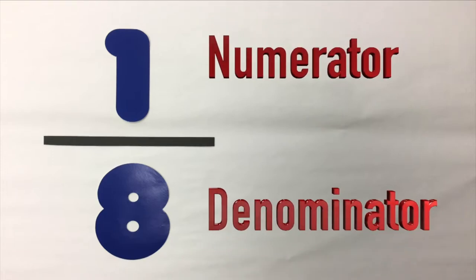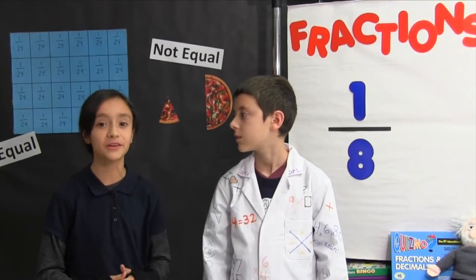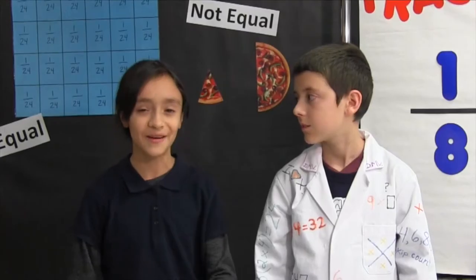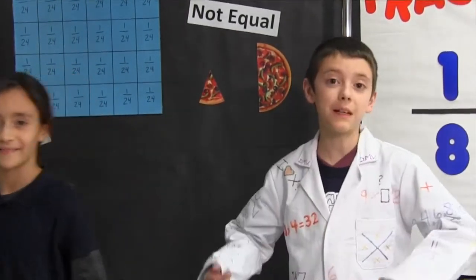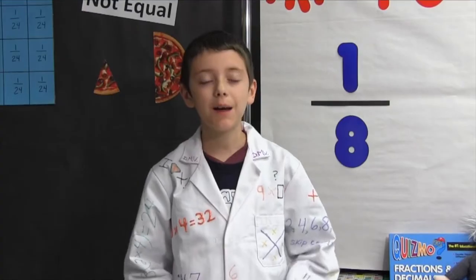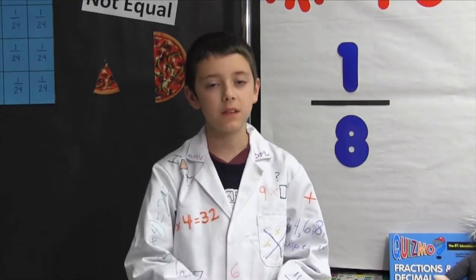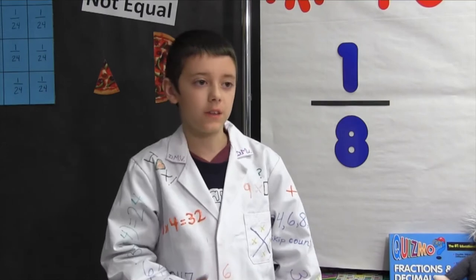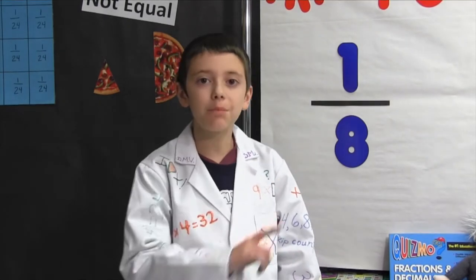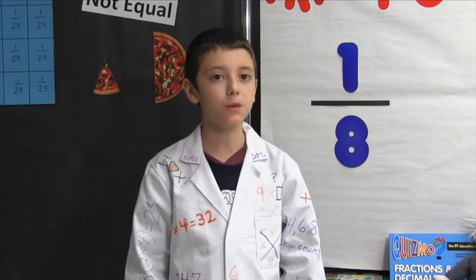I know that the denominator goes on the bottom because D stands for down and D stands for denominator. Back to what I was saying — the denominator goes on the bottom. It is how many pieces of pizza there are in the whole and how many pieces it is cut into. The numerator goes on the top. This is how many pieces you have, are talking about, or in this case, how many you ate.